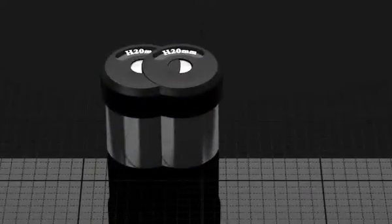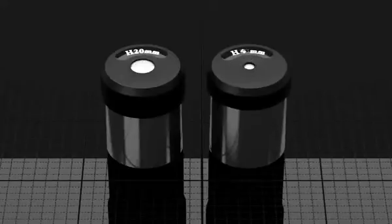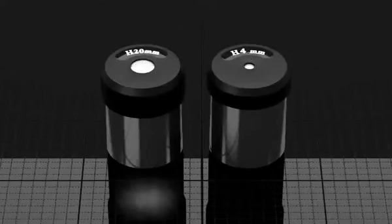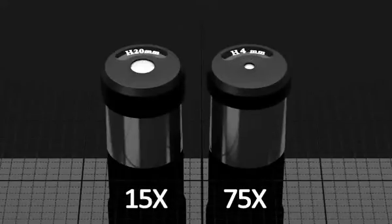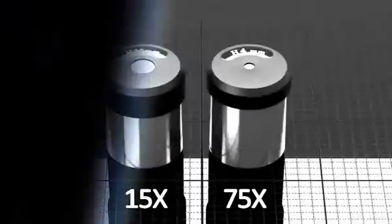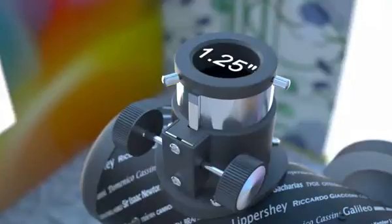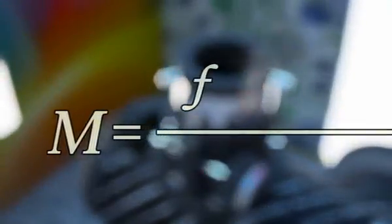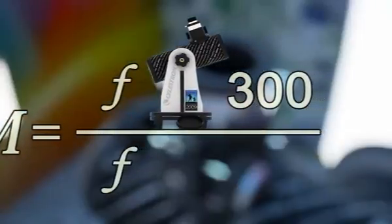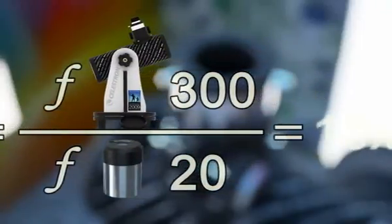The First Scope comes packaged with 20mm and 4mm eyepieces, delivering 15x and 75x magnifications respectively. The First Scope is compatible with any 1.25-inch standard eyepiece. To calculate magnification, simply divide the focal length of the scope by the focal length of the eyepiece in question.